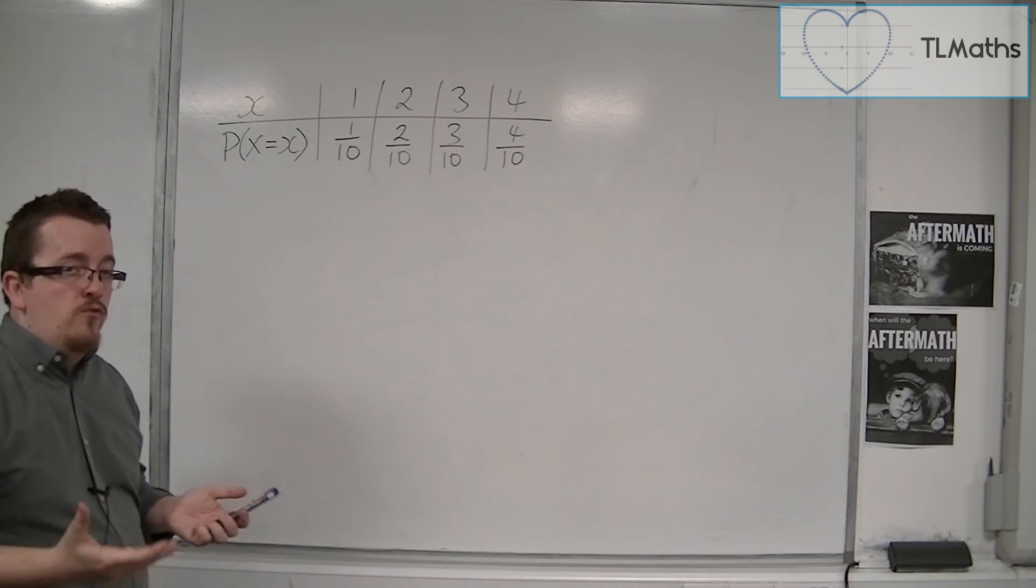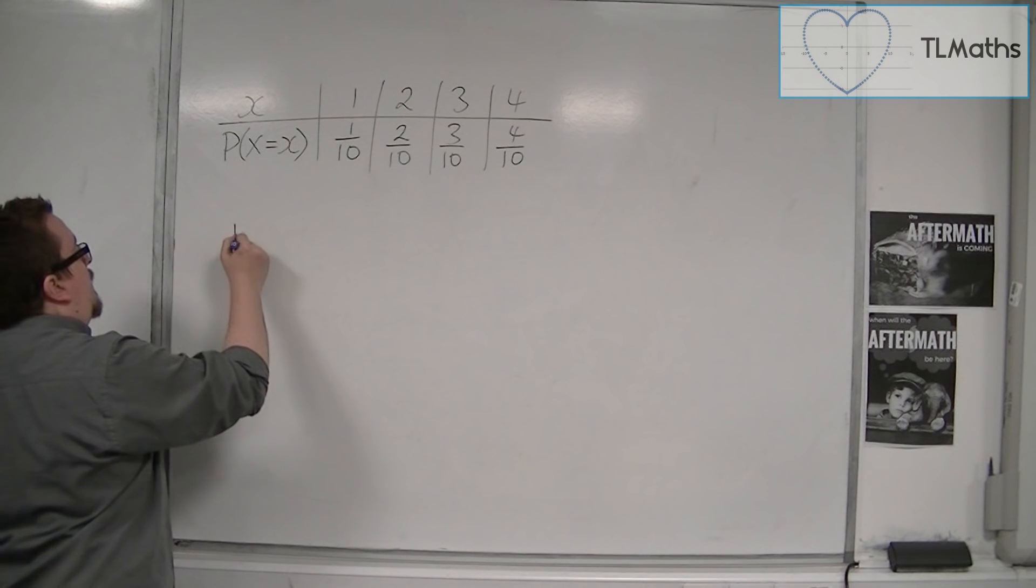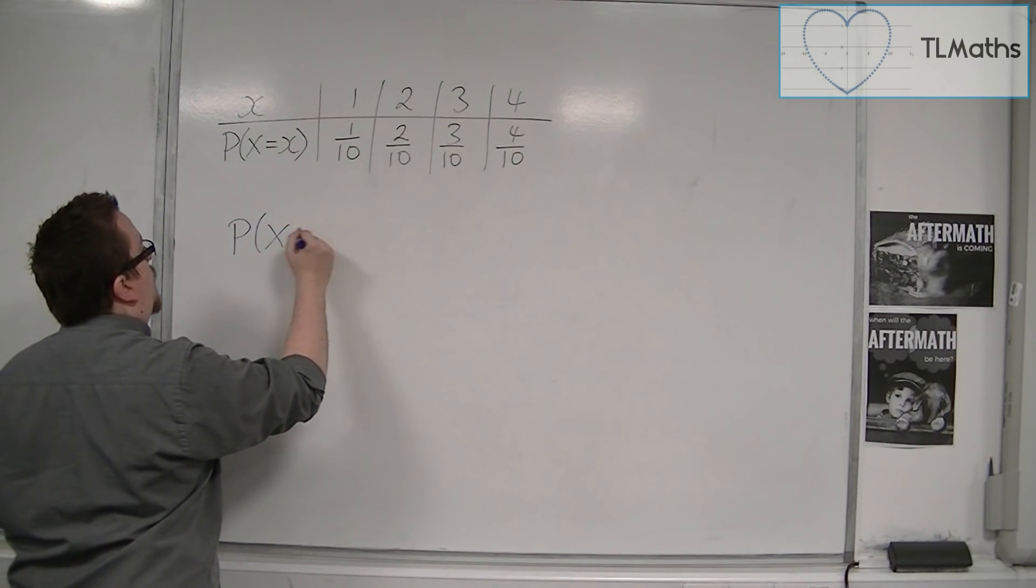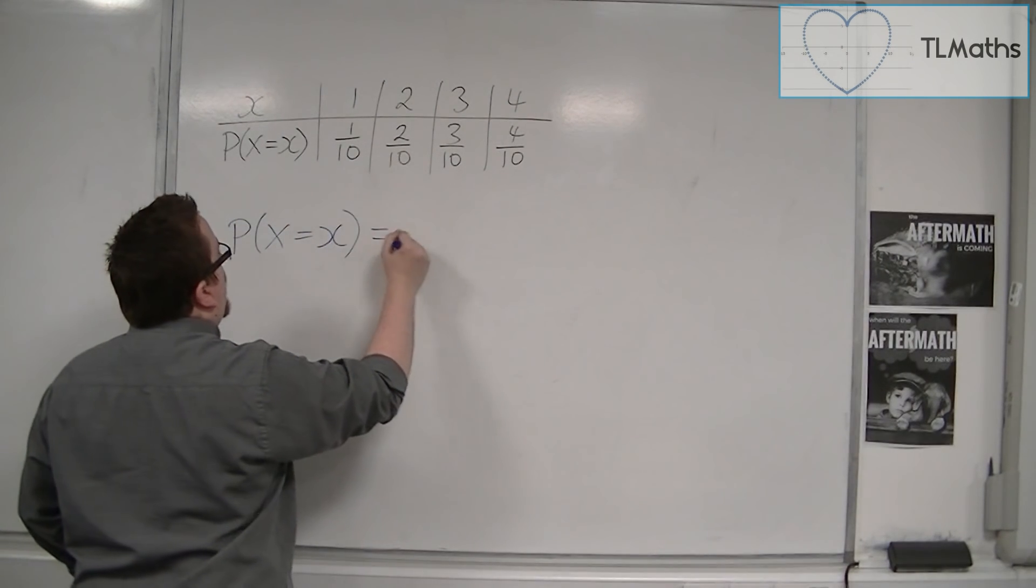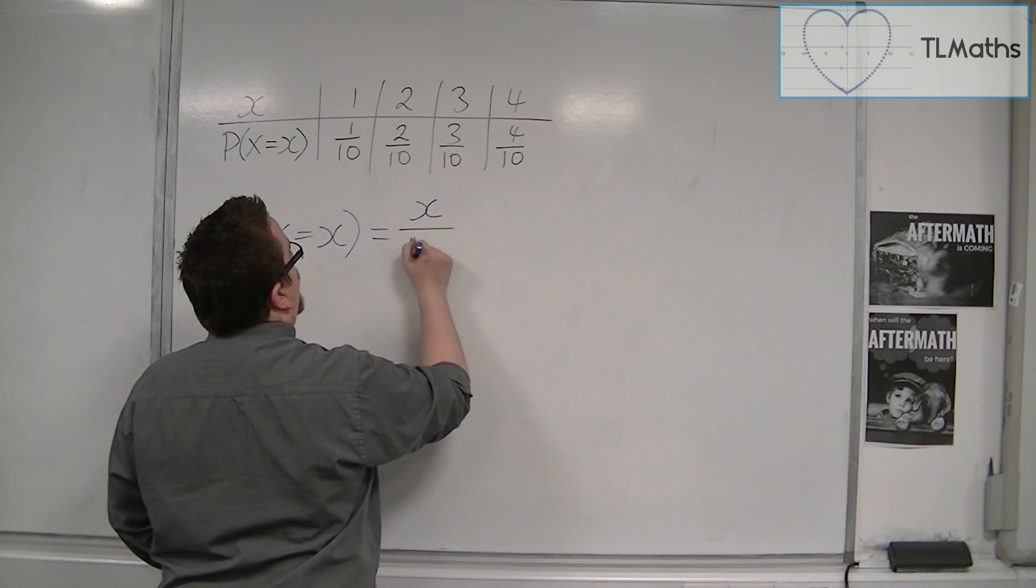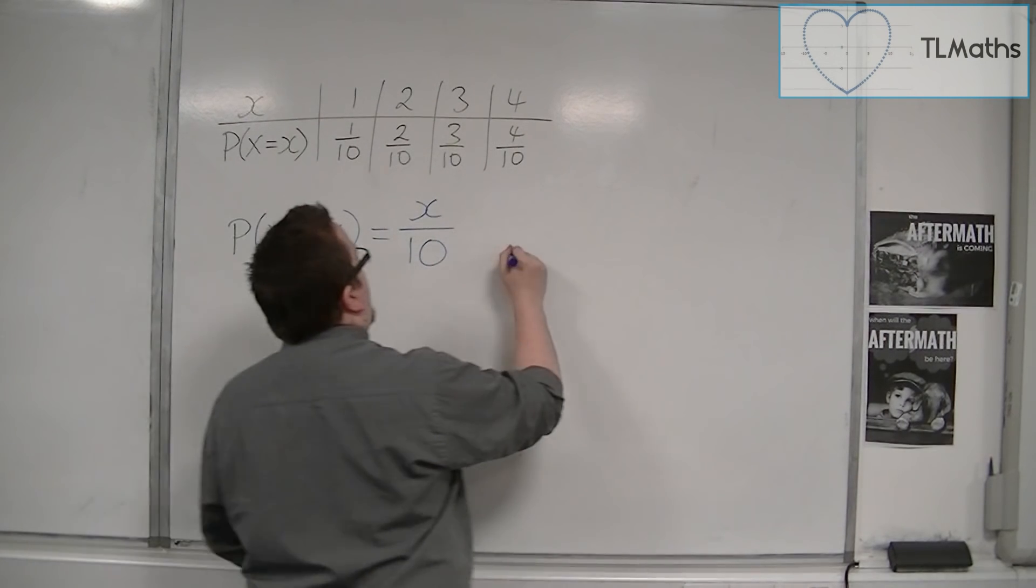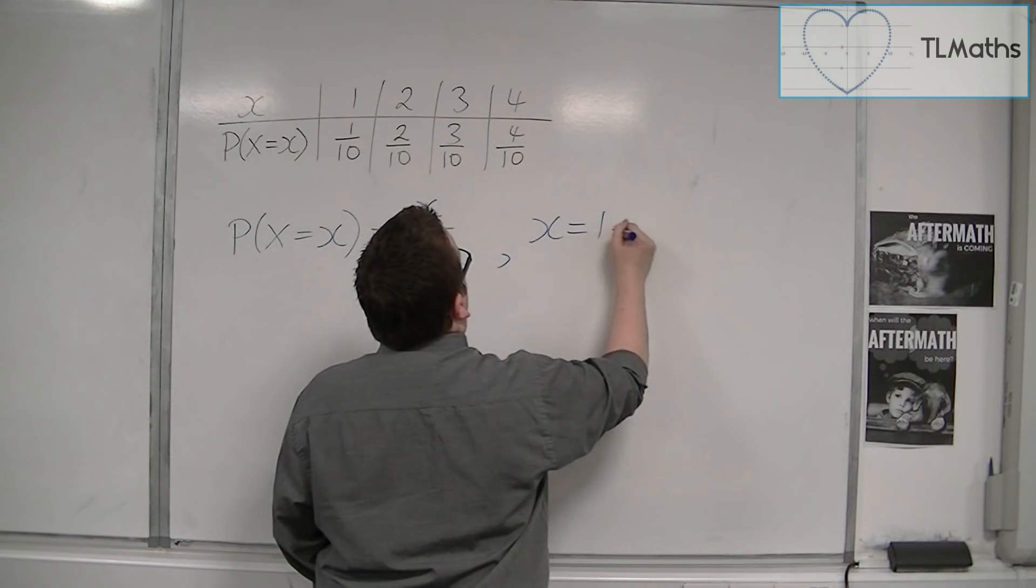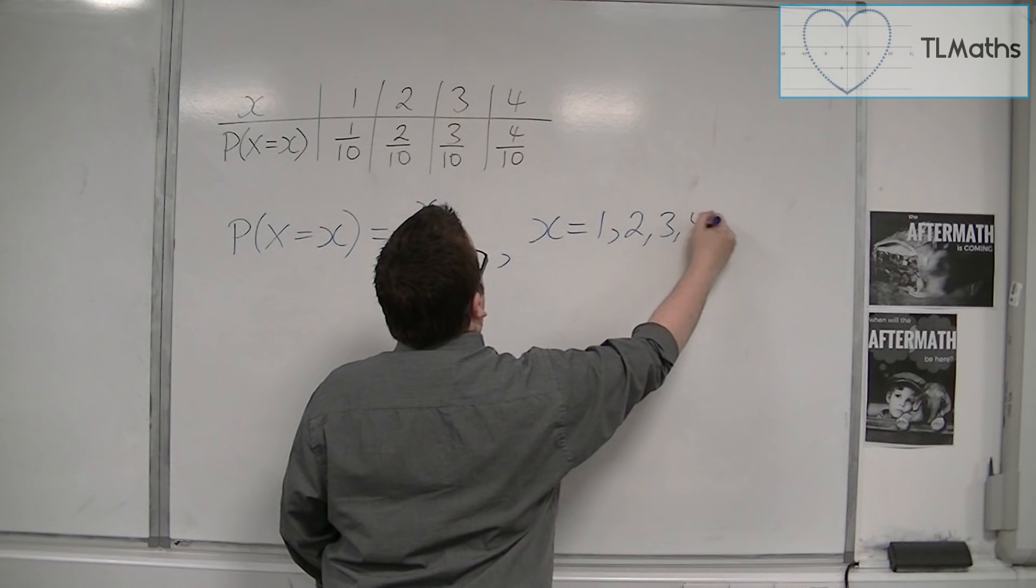So what we could write is that the probability of x being equal to x is equal to each of the x's over 10, where the x values are 1, 2, 3 and 4.